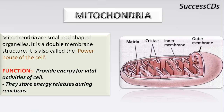Mitochondria are the powerhouse of the cell. They are small, rod-shaped organelles whose main function is to provide the energy required for chemical reactions inside the cell, releasing it in the form of ATP — the energy currency of the cell. They also store energy and release it during certain reactions.